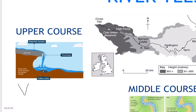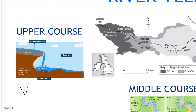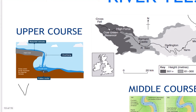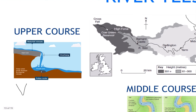Undercutting continues — that's when we continue to erode the brown rock, the soft limestone — and this creates a new overhang. This process of what we call headward erosion continues, so the waterfall keeps moving further back and retreats upstream. The rock left either side of the waterfall forms our steep-sided gorge.